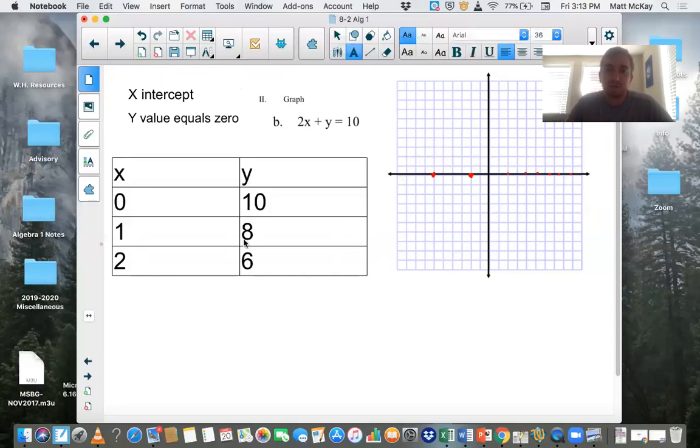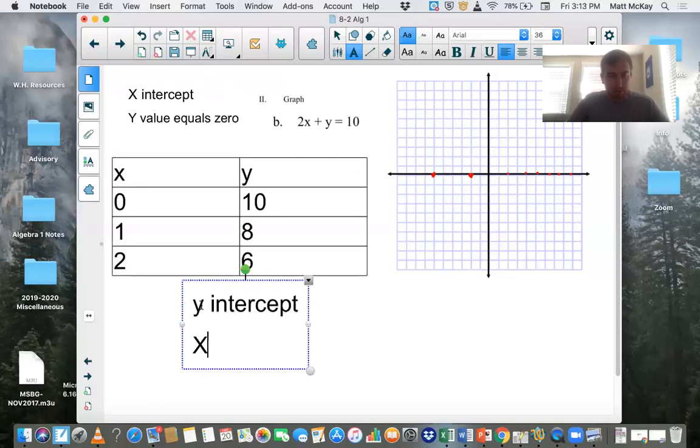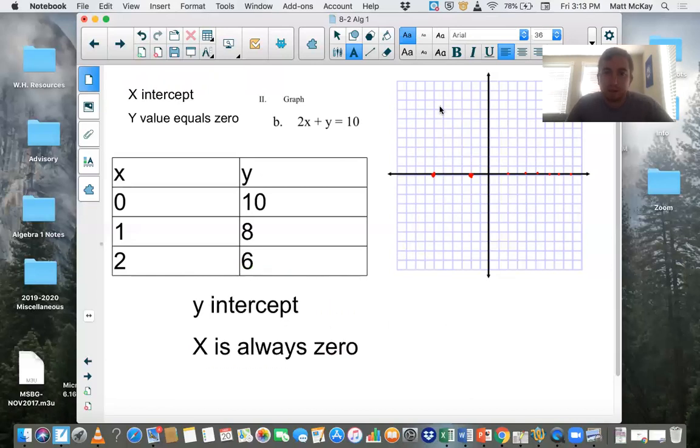So one thing that can be confusing is sometimes students think of x-intercept, and they think that x is going to be zero. But it's always going to be the opposite. So y is going to be zero. Just like if I said, what's the y-intercept? Well, y-intercept, x is always zero. Again, another example. If we think of, here's the graph. Where is it going to intercept the y-axis? Well, again, here's the y-axis, the vertical one.